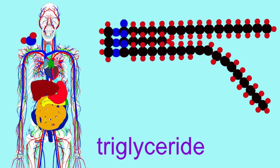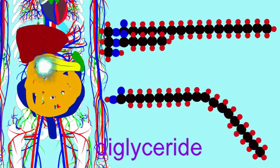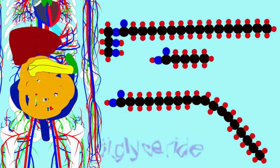There is another lipase expressed in the pancreas, known as bile salt-dependent lipase, which is also expressed in breast milk.